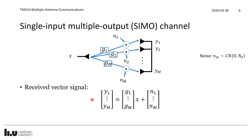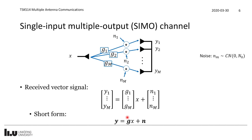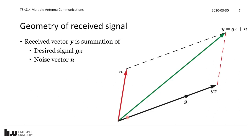We can represent all received signals using vectors. Y₁ = G₁·X + N₁ through Y_M = G_M·X + N_M can be written compactly as **y** = **g**·X + **n**, where **y** is the M-dimensional received signal vector, **g** is the channel vector, and **n** is the noise vector. We call **g** the channel vector. In M-dimensional vector space, the received signal Y is the sum of the desired signal **g**·X and the noise vector **n**.